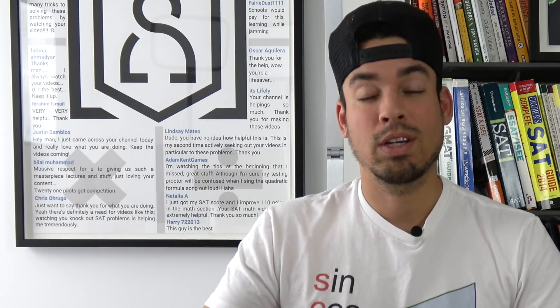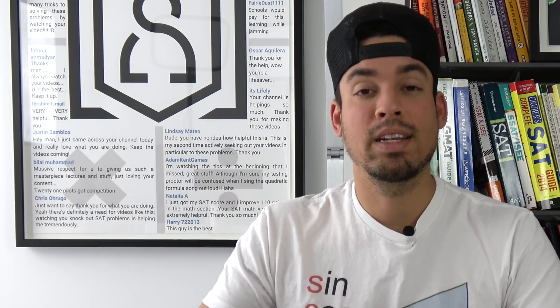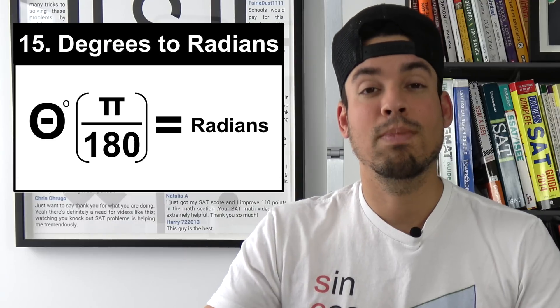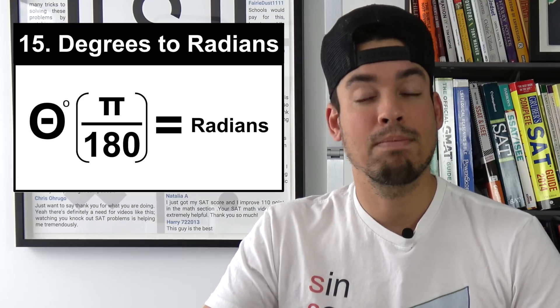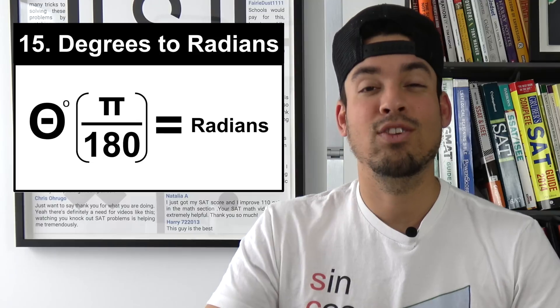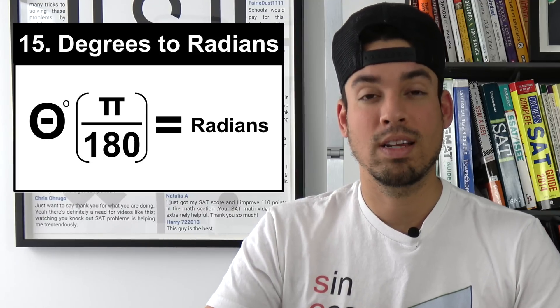Next on the list is how we convert from degrees to radians. So all you got to do is take your measurement in degrees, plug it in for theta, multiply it by pi over 180 and you get the equivalent value in radians.